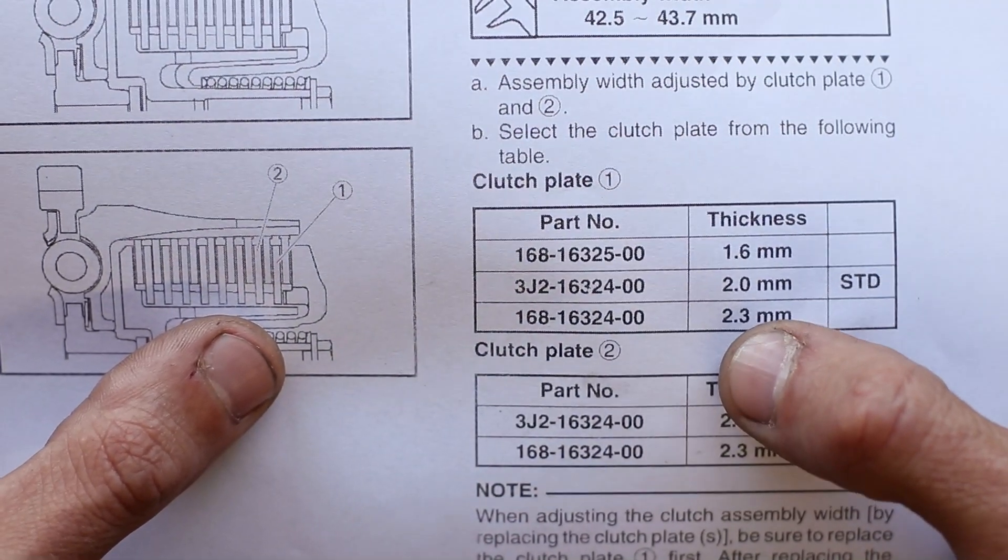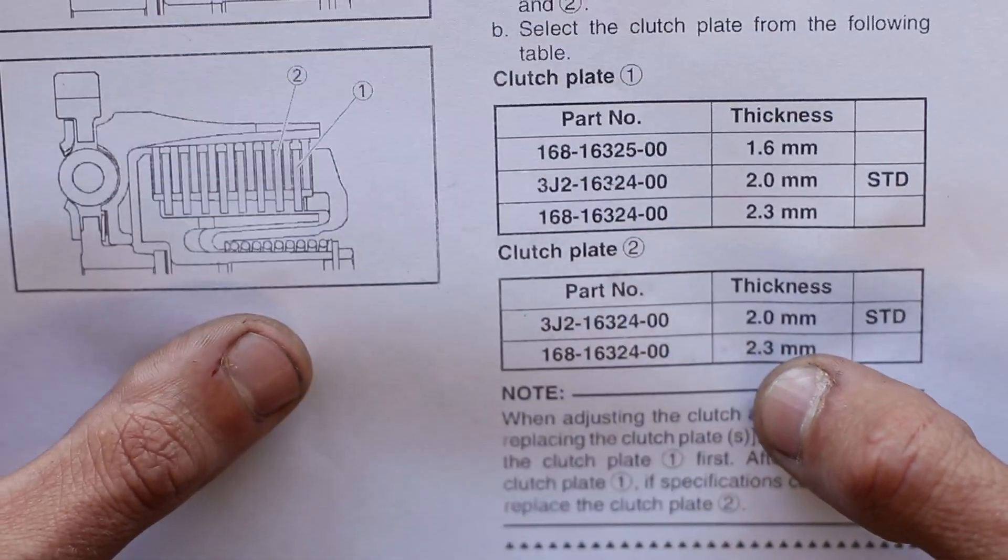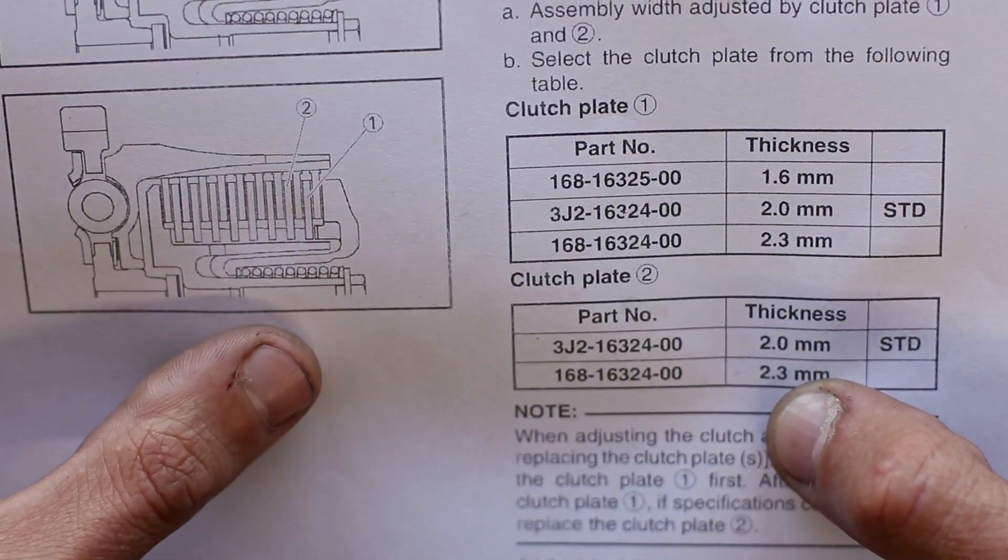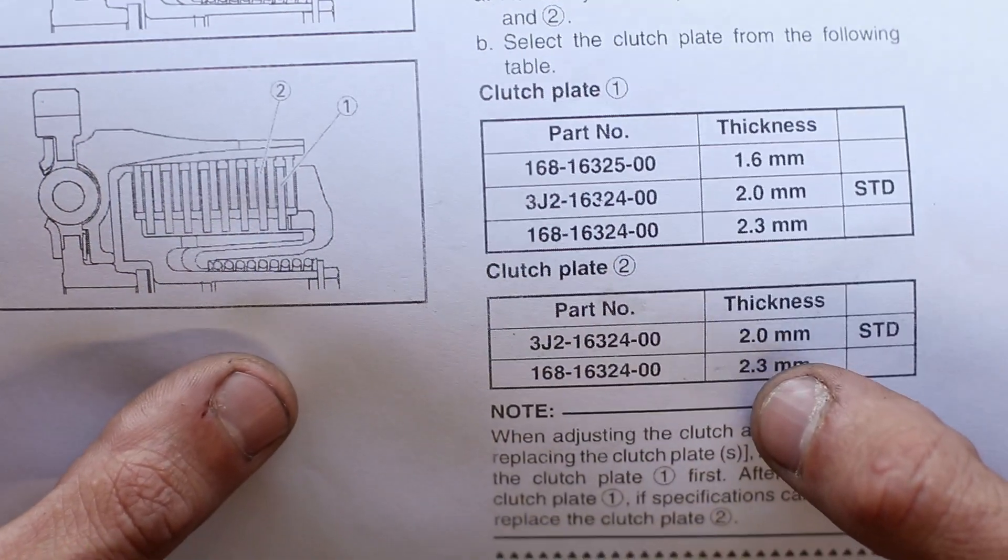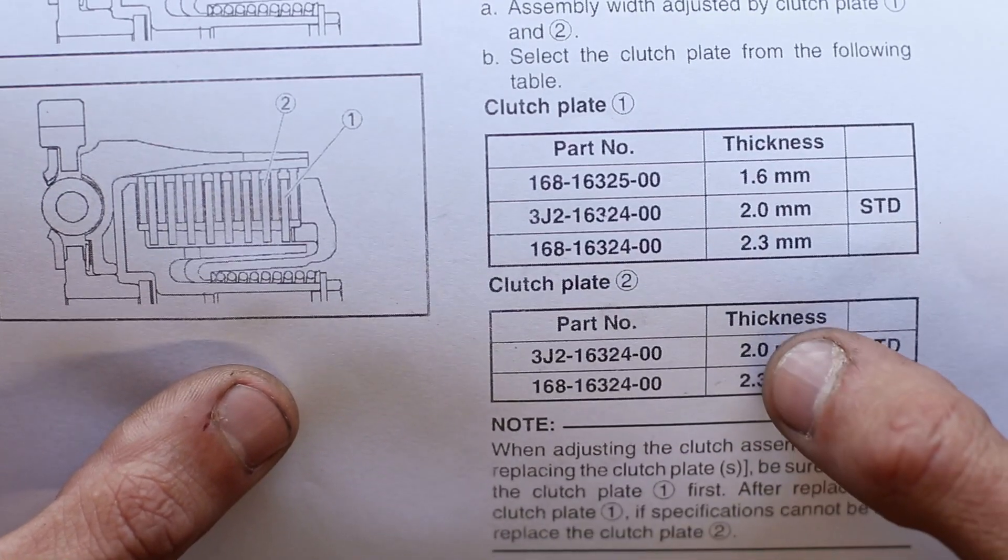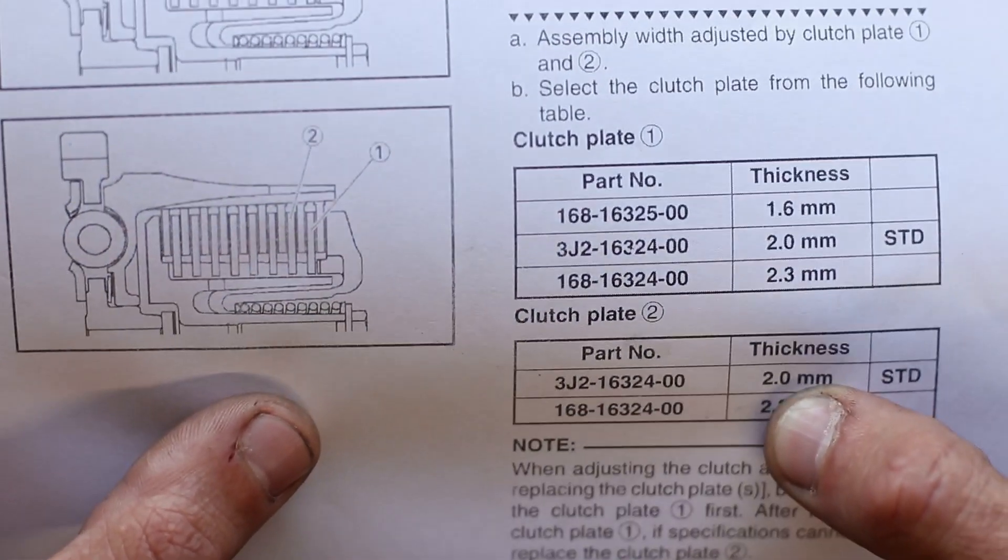Now in my case, that was 2.3 millimeters. And for clutch plate number two, which is the next one in, you've got only two thicknesses, 2mm and 2.3mm, and mine is the standard 2mm clutch plate.